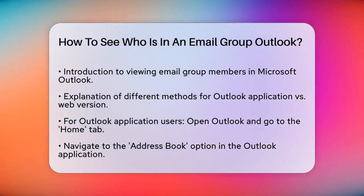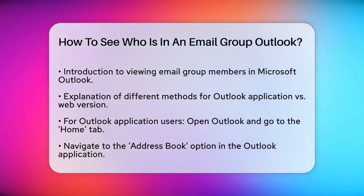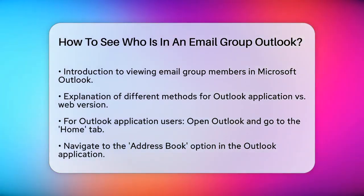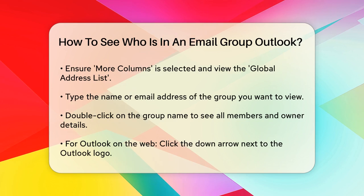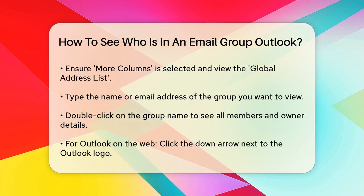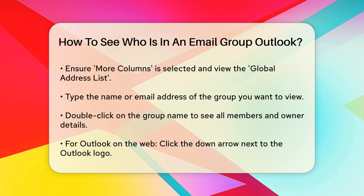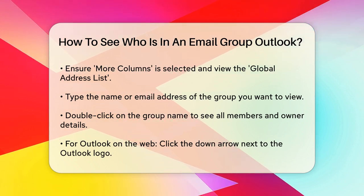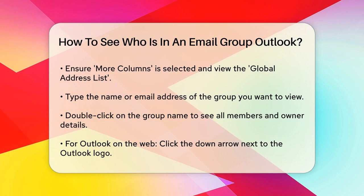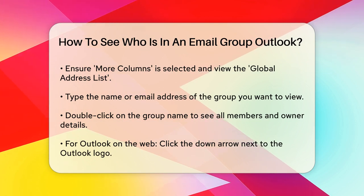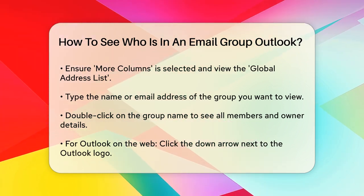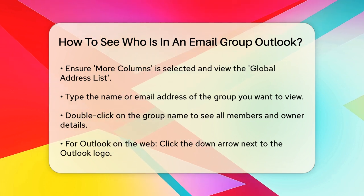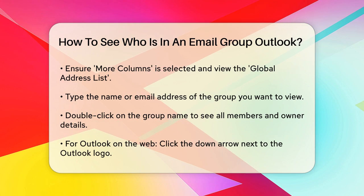If you're using the Outlook application on your laptop or PC, here's what you need to do. Open Outlook and go to the Home tab. From there, navigate to the Address Book option. Make sure More Columns is selected and that you're viewing the global address list. Now, type in the name of the group or the email address of the group you want to view. Once you find it, double-click on the group name and you'll see all the members listed, along with the owner of the group and other relevant details.